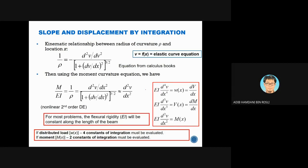EI is the flexural rigidity, where E is the material's Young's modulus — for steel it is 200 GPa — and I is the geometric property, the moment of inertia about the neutral axis.